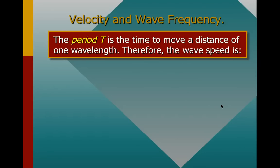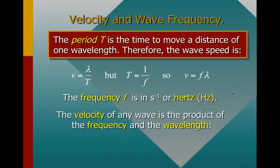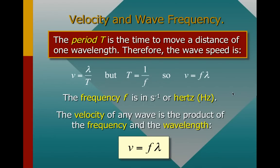The period is the time it takes to move one wavelength's distance. Therefore, the wave's speed is related to the period and distance by this formula: velocity equals the wavelength divided by the period, v = λ/T. Because the period equals 1 over frequency, we can also say that velocity equals frequency times wavelength, v = fλ. The frequency is in hertz. This is the more common version of the wave speed formula, and many of you may have remembered this from chemistry class.